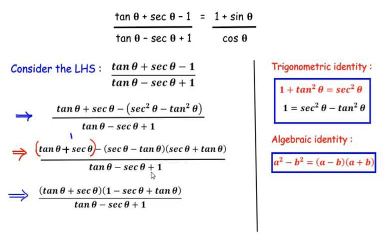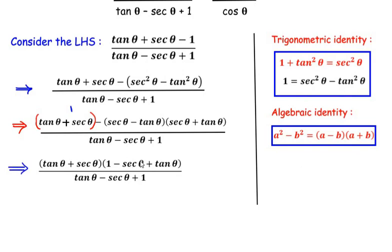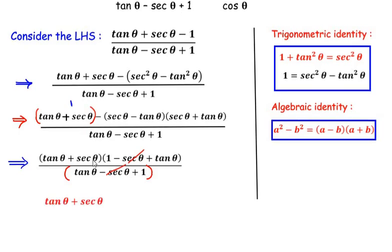Looking at the denominator and the numerator, the bracket (1 − sec θ + tan θ) is the same as (tan θ − sec θ + 1) in the denominator — tan θ is positive, sec θ is negative, and 1 is positive. So we cancel the matching brackets, leaving us with tan θ + sec θ.